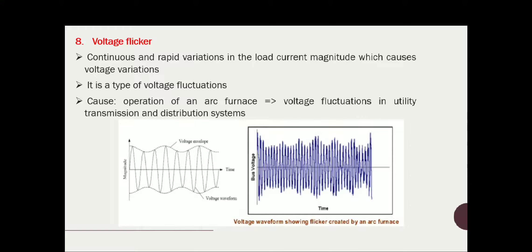You can see one waveform here — this is the voltage envelope profile. The maximum value of all cycles should be the same, but you can see it is varying; the voltage is fluctuating. By drawing the voltage envelope, you can see the variation or fluctuation in the voltage. The variation in the peak value on the positive and negative side means the envelope is also varying. By drawing the envelope you can measure how much flicker effect is present in your voltage waveform, shown here due to the arc furnace.